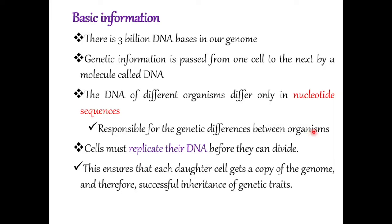To pass information from one generation to the next, the cell must replicate DNA before it can divide. This ensures that each daughter cell gets a copy of the genome. Therefore, there will be successful inheritance of genetic material.